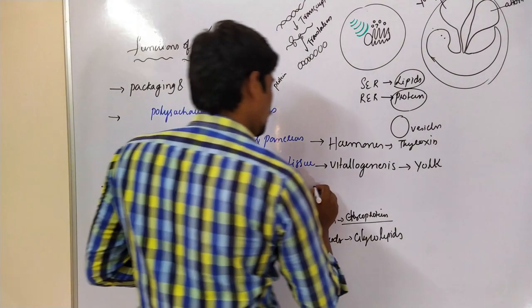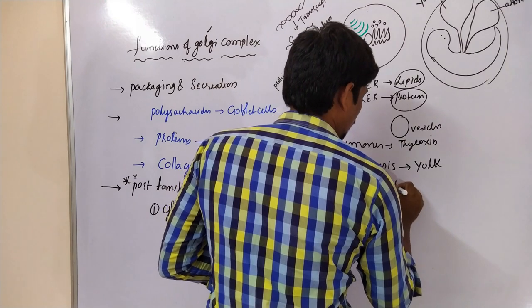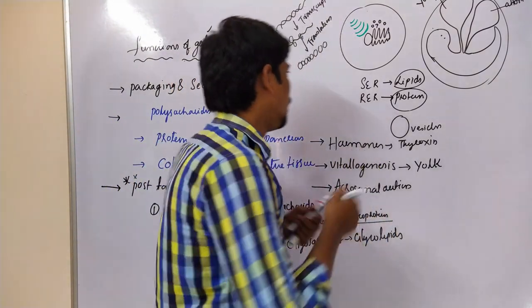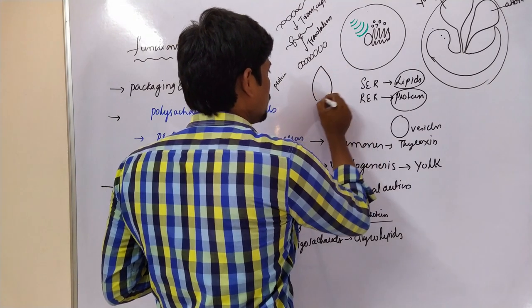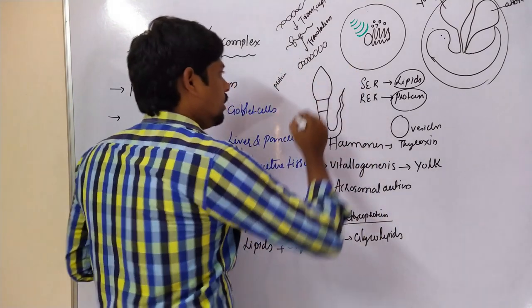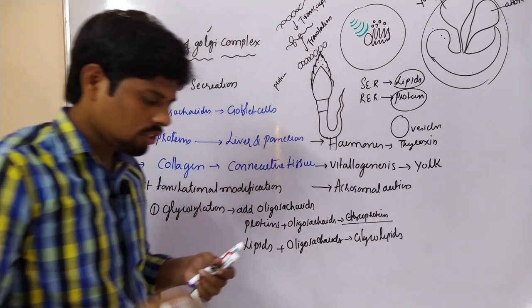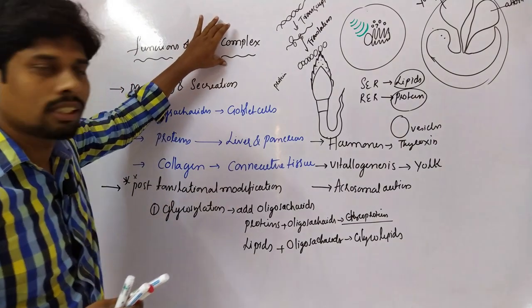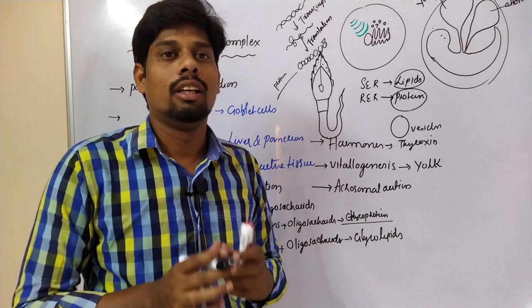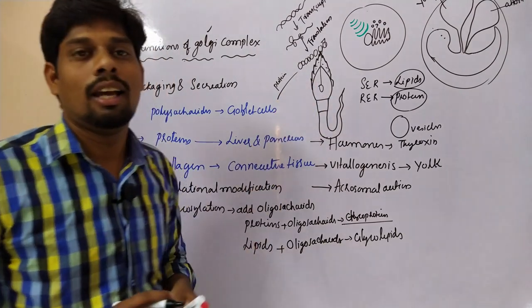The next important function is acrosomal action. The acrosome is a part of the sperm cell. The acrosome contains a high number of Golgi complexes, which produce enzymes. These enzymes digest the outer layers of the egg, allowing fertilization to occur. This is the main important function of the Golgi complex present in the acrosome.